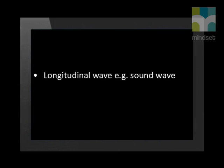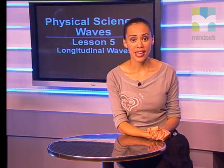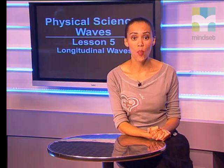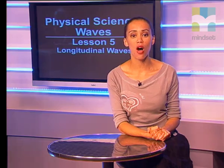Let's look at some of the properties of a longitudinal wave. Sound waves are an example of longitudinal waves. They require a medium in which to propagate and therefore cannot travel in a vacuum like a transverse wave. Sound waves have a much longer wavelength than light. Sound waves can diffract or bend around buildings or move through doorways. This explains why you can often hear people when you can't see them.